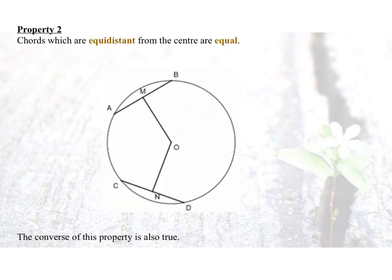Symmetrical properties of circle. Property number two: chords which are equidistant from the center are equal. What do you mean by equidistant from the center?